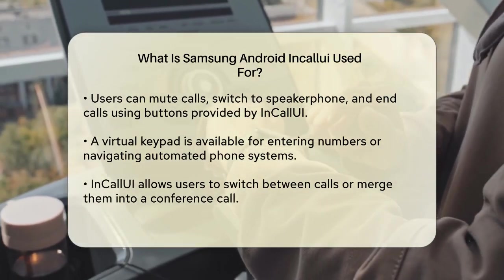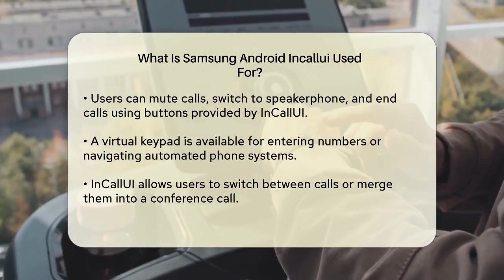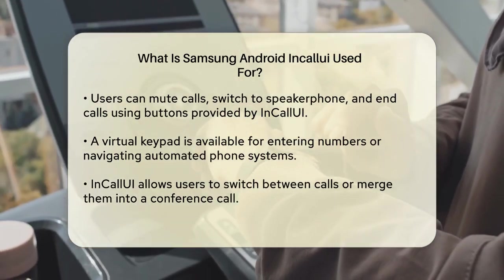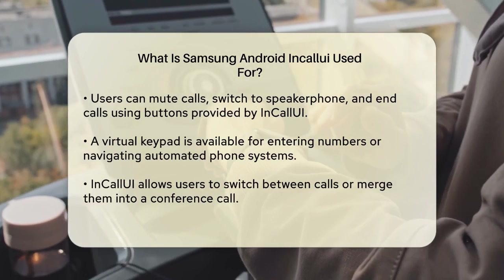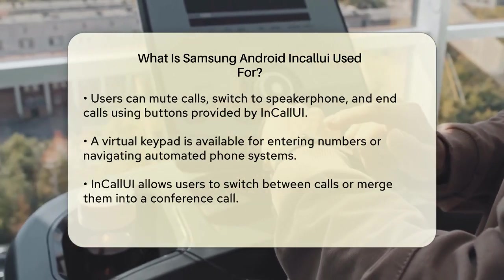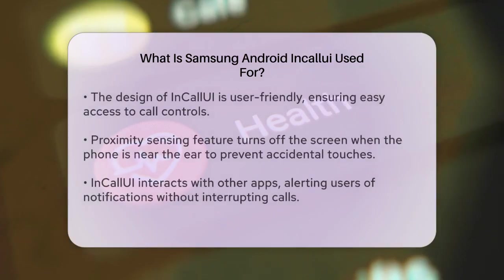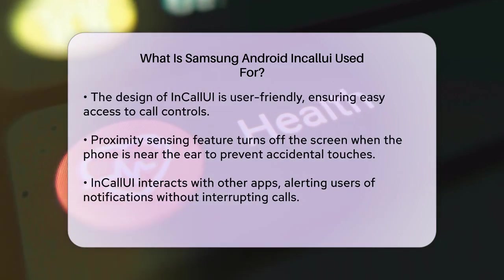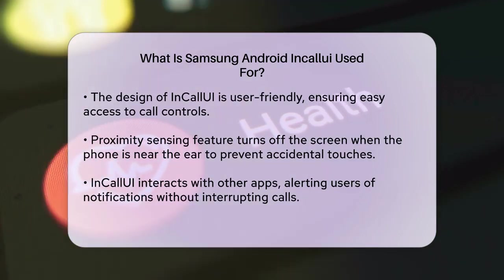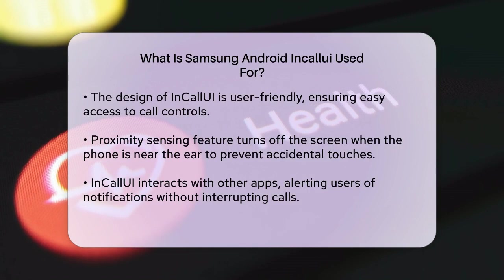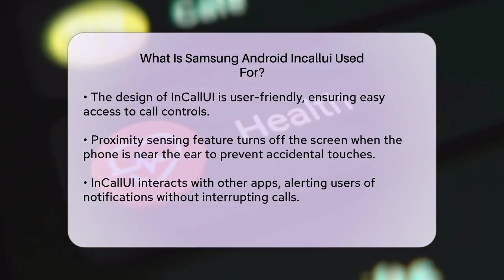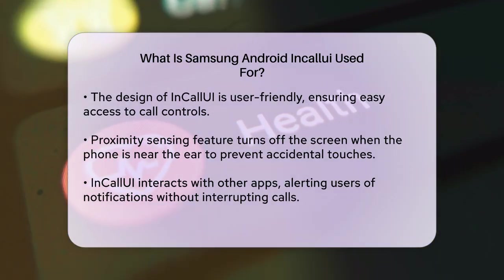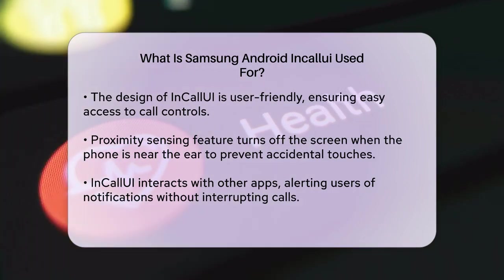One of the key features of InCall UI is its user-friendly design. It ensures that all the call controls are easily accessible without any confusion. For example, when you bring the phone close to your ear, the screen usually turns off automatically to prevent accidental touches, thanks to the proximity sensing feature.